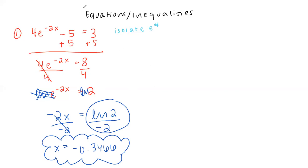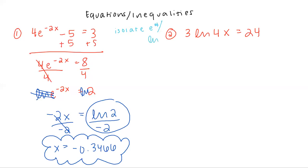Let's go through one more problem like that. Try to pause the video and solve this one on your own. We have 3 times the natural log of 4x equals 24. Start by isolating the natural log — it's similar to isolating e. So divide by 3 first, leaving us with the ln of 4x equals 8.